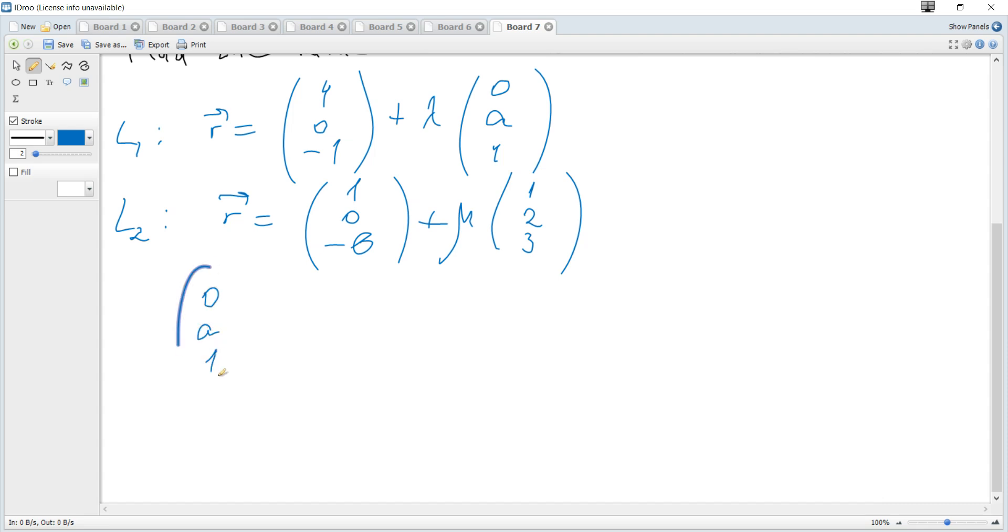So (0, A, 1) dot product (1, 2, 3) equals 0. Dot product is x by x plus y by y plus z by z. So it becomes 0 plus 2A plus 3 equals 0.